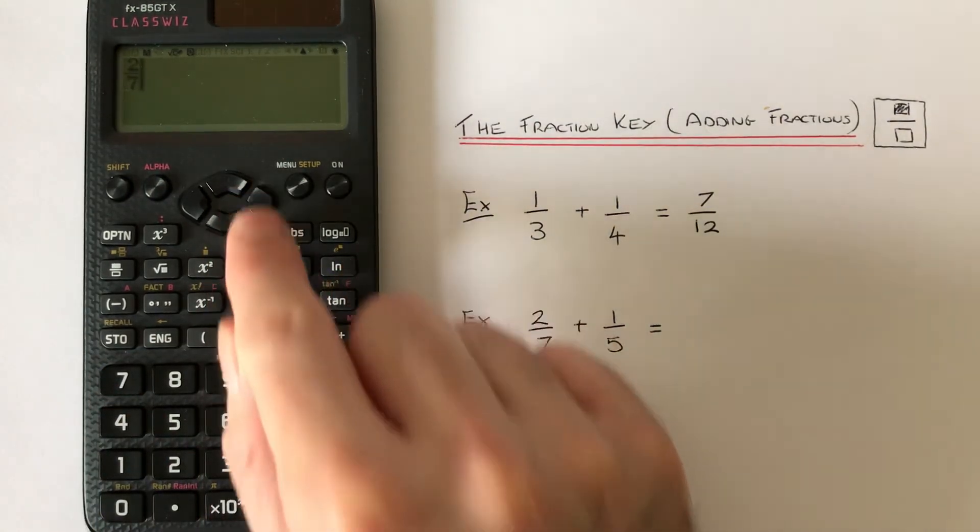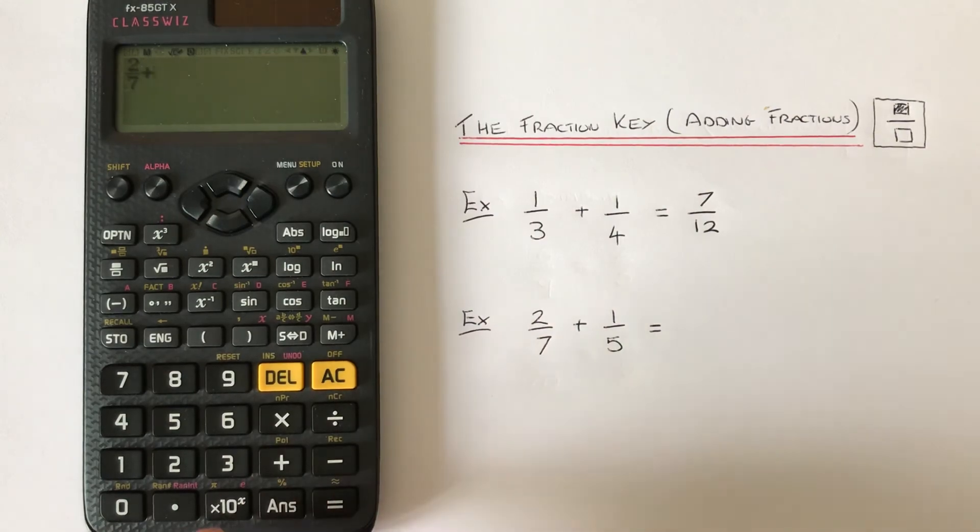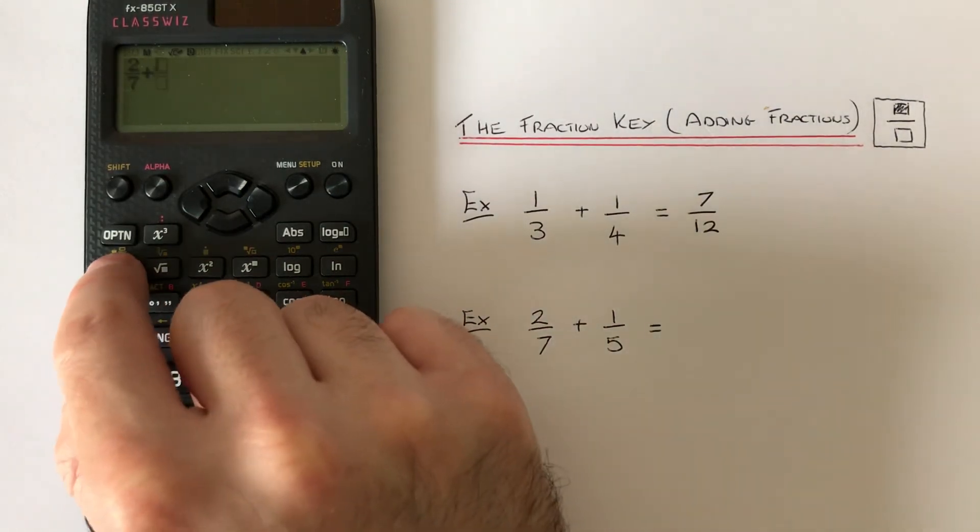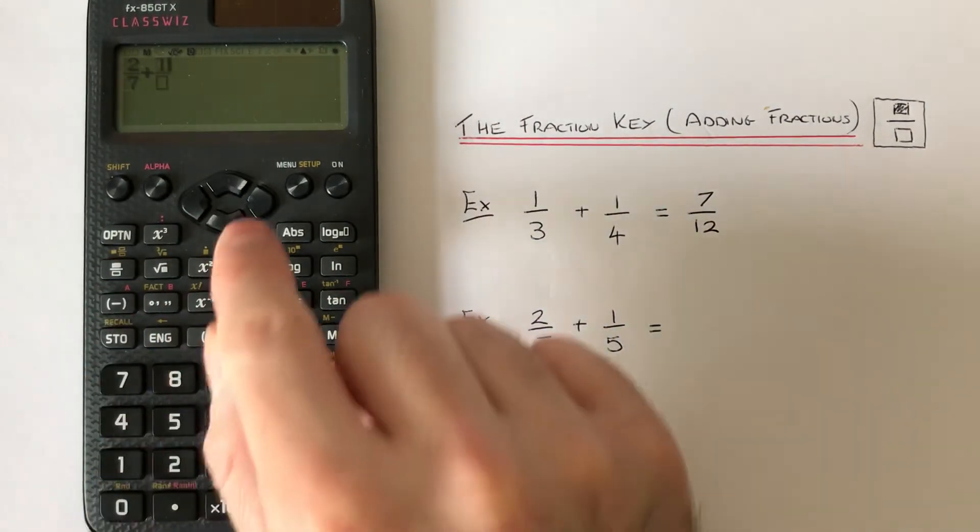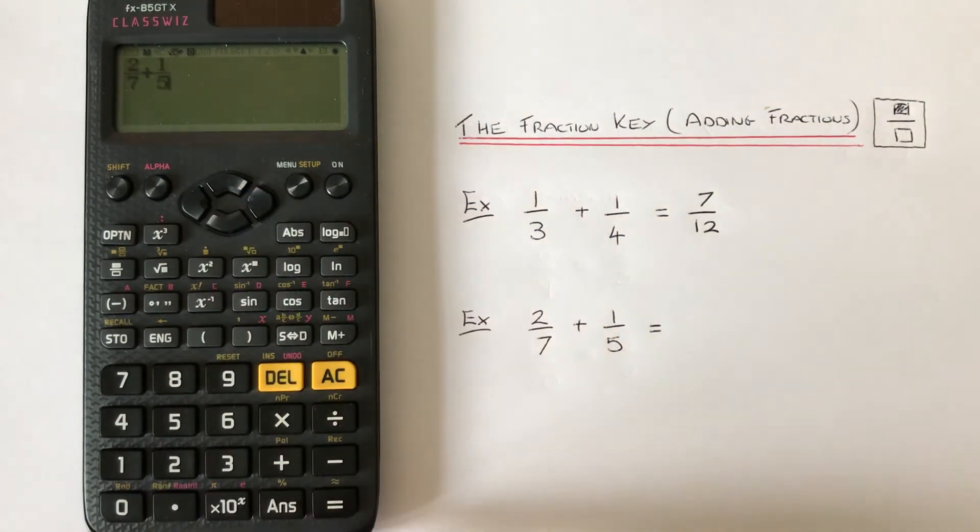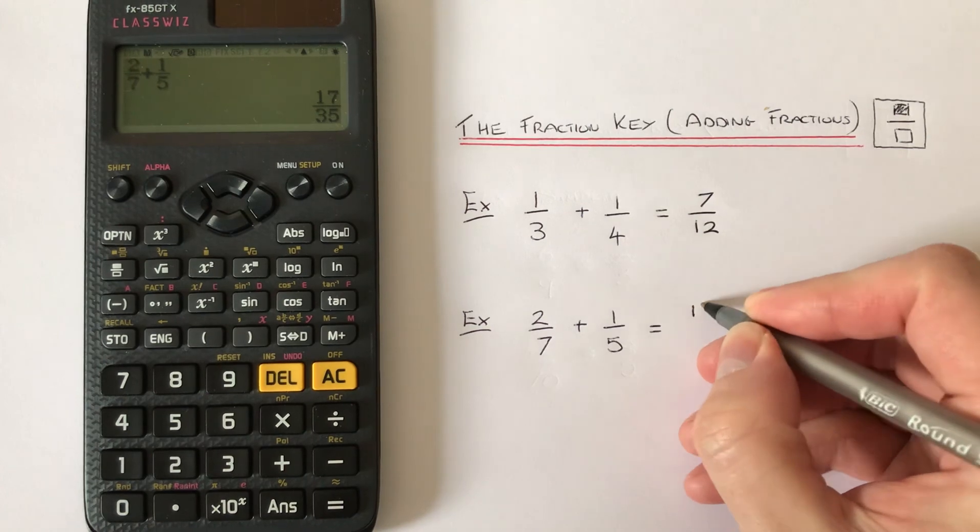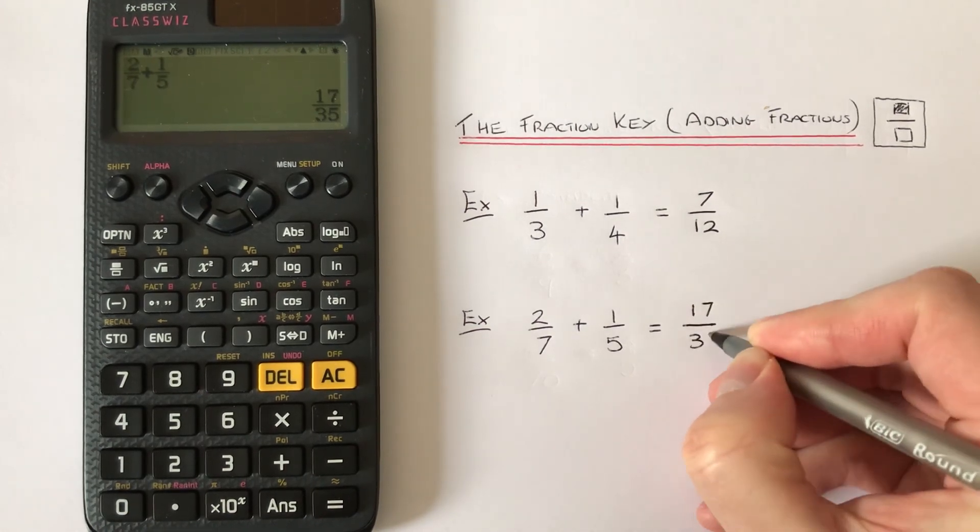Then press the right key and plus. We've got one fifth. So one right key five. Press the equals key. And we have the answer seventeen thirty fifths.